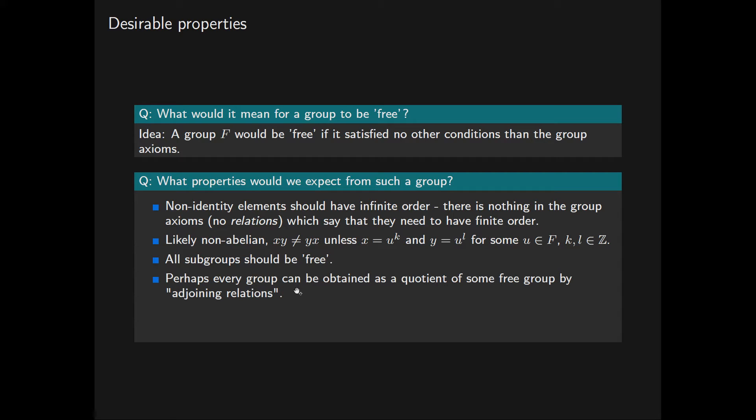Perhaps every group could be obtained as a quotient of some free group by adjoining relations, adding conditions to the free group until we wind up with the target group. And in a similar vein, perhaps if G is any group, then a free group F would allow for more homomorphisms from itself to G than other groups in some meaningful sense, because F is minimally constrained.